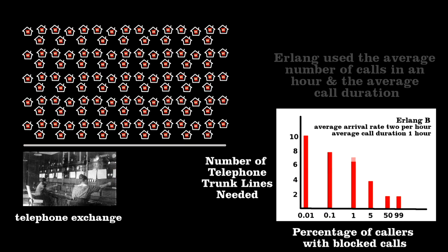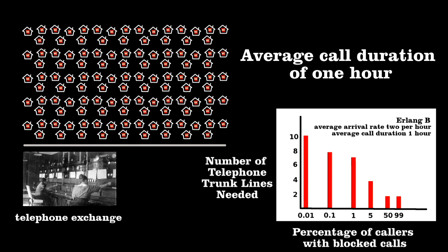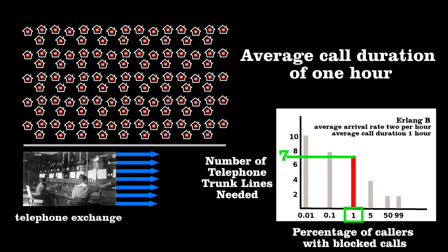He showed that given the average number of calls and their average length, one can estimate the number of trunk lines needed. To make the calculation simple, I've assumed that Danes like to talk a long time, one hour on the average. Erlang showed that for only 1% of the people to have a blocked call, you'd need to install seven trunk lines.